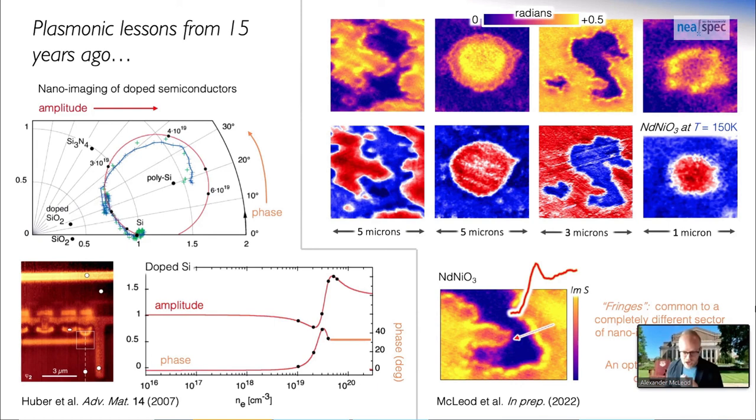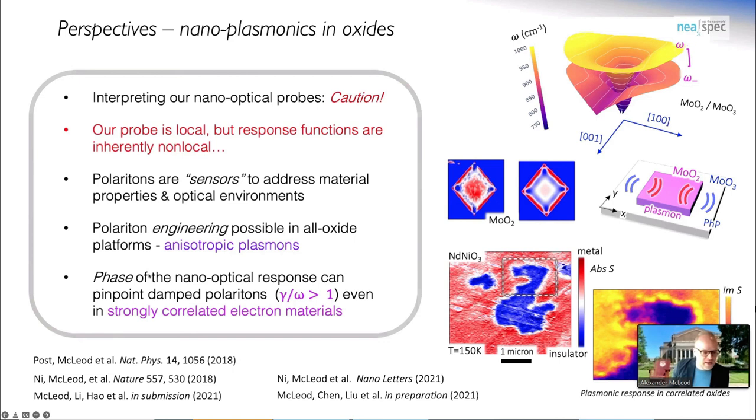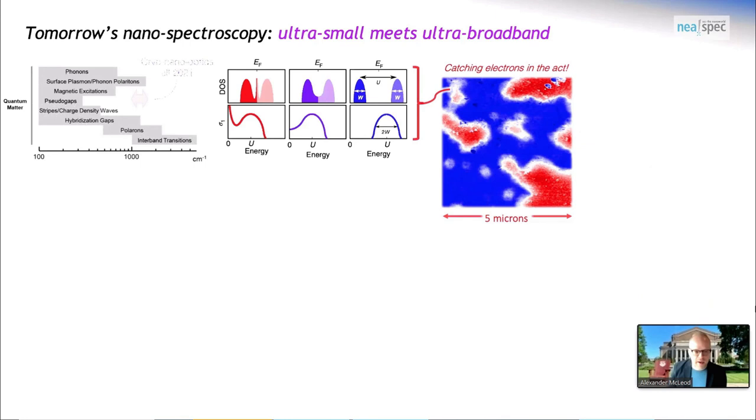This approach to using near-field phase to scrutinize the optical properties of these correlated oxides must leverage very strongly the reality that plasmons are alive and well inside of correlated oxides. I just want to conclude here, and I apologize for going over time, but the key point is that the phase of the nano-optical response can really pinpoint even strongly damped polaritons, especially in correlated electron materials.